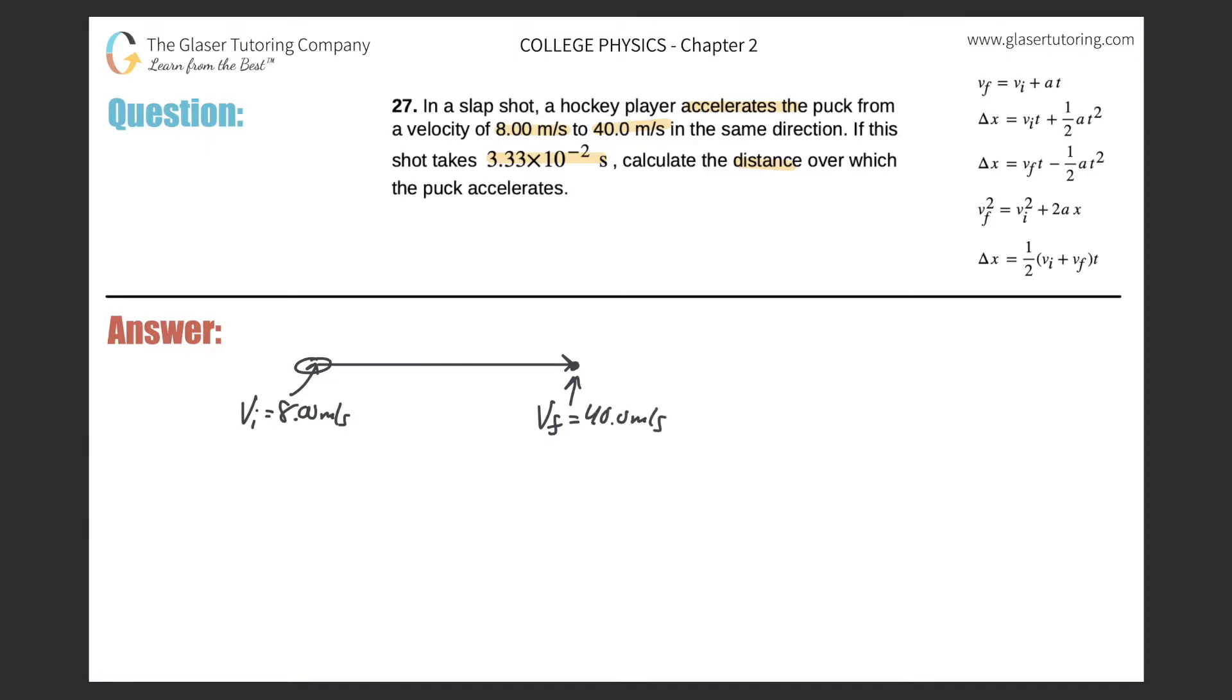So this shot takes 3.33 times 10 to the minus 2 seconds. So what that means is that in order for the player to accelerate the puck from 8 meters per second to 40 meters per second, that process will take a total of 3.33 times 10 to the minus 2 seconds.